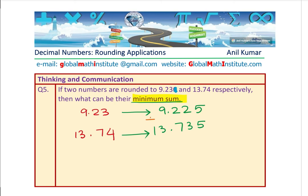Let's add them up and see what we get. So 5 and 5 is 10, carry 1. Then 6, then 7 and 2 is 9, then 9 and 3 is 12, and 1. So 22.960 becomes the minimum sum for the numbers in this case.